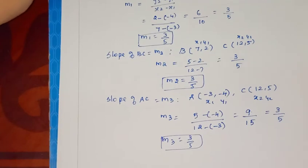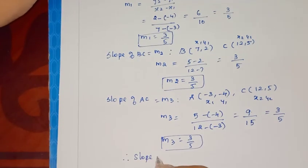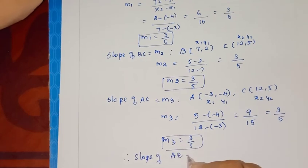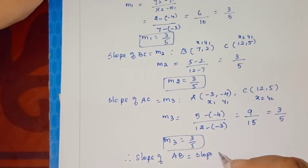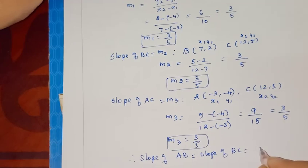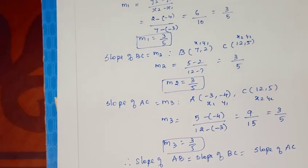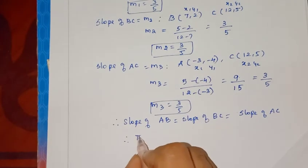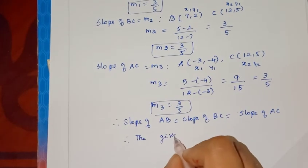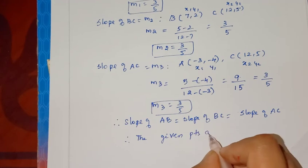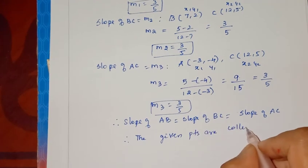So all the slopes are equal, so definitely the points are collinear. Therefore slope of AB equals slope of BC equals slope of AC. Therefore the given points are collinear. We showed it.